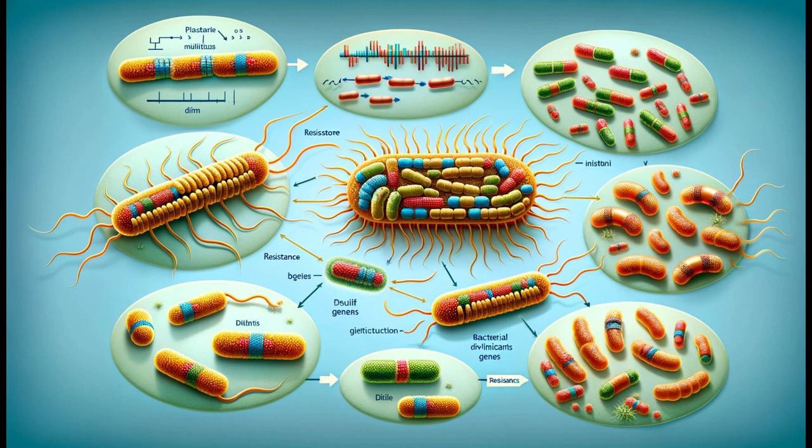Horizontal gene transfer. Bacteria can also acquire resistance genes from their peers through conjugation, transformation, and transduction.